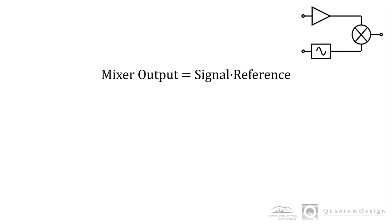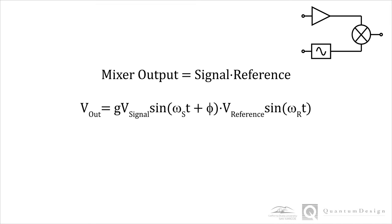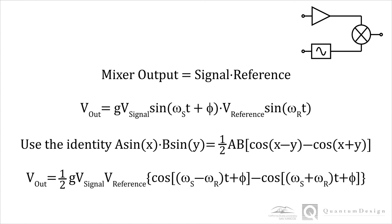We'll go back to see what the mixer does. It multiplies the signal with our reference. Since this is an AC technique, both the signal and reference are sine waves. G is the amplifier gain, omega is the angular frequency of the wave, and phi is the phase constant of the signal. By applying a trigonometric identity, the mixer output takes on the final form of one-half the product of the wave amplitudes and two cosine terms.